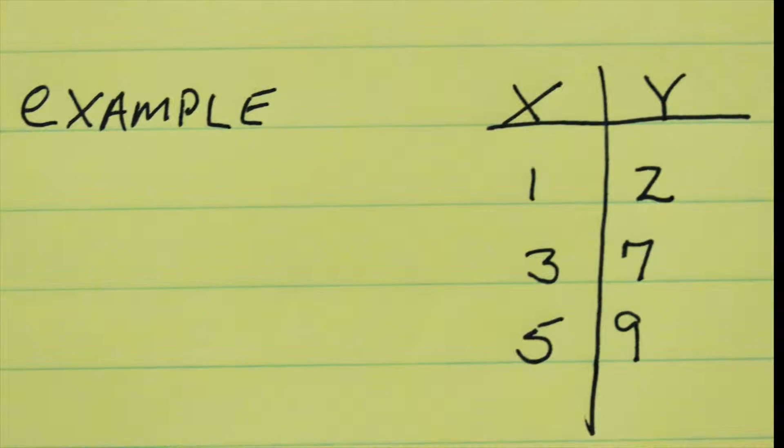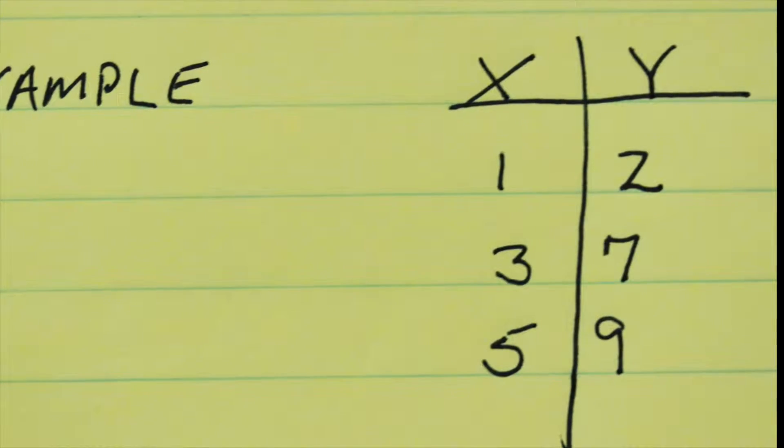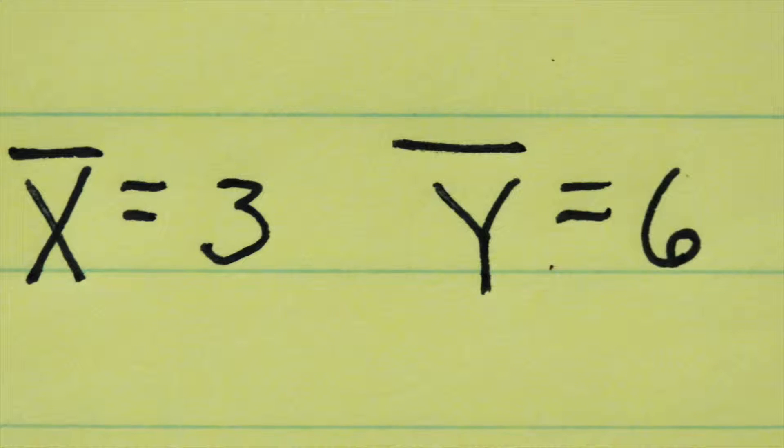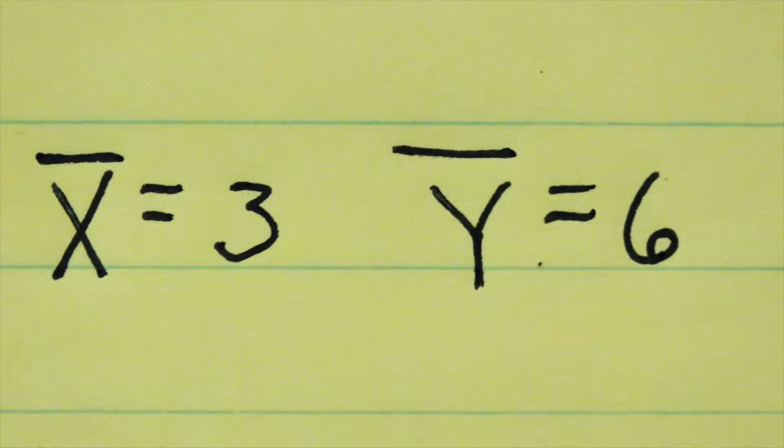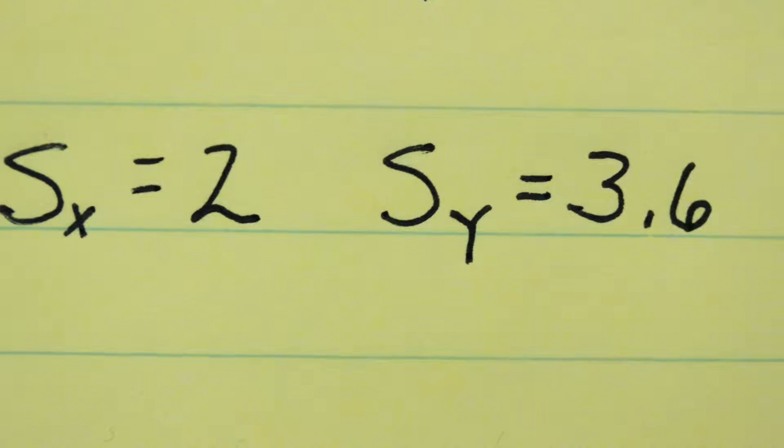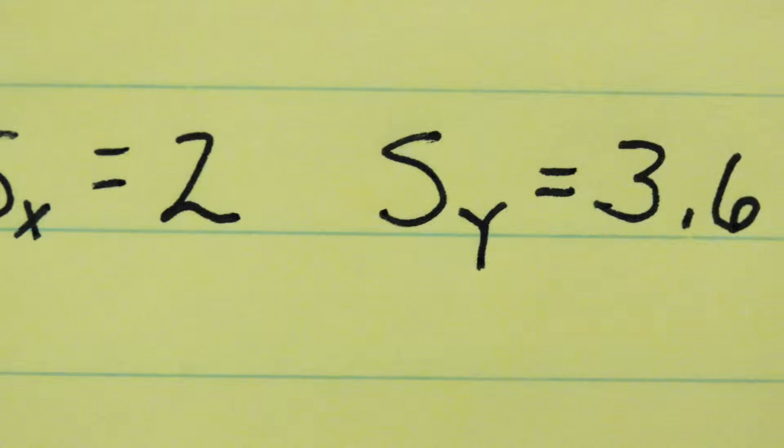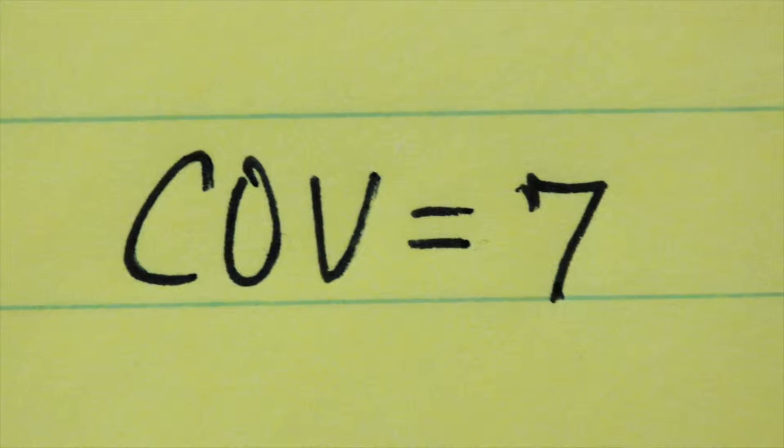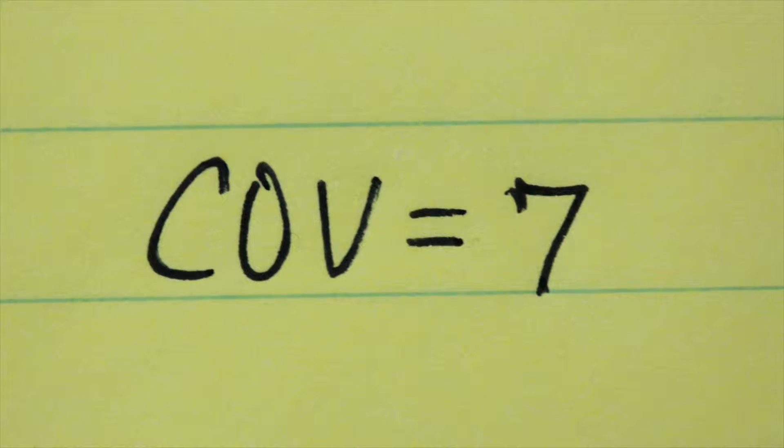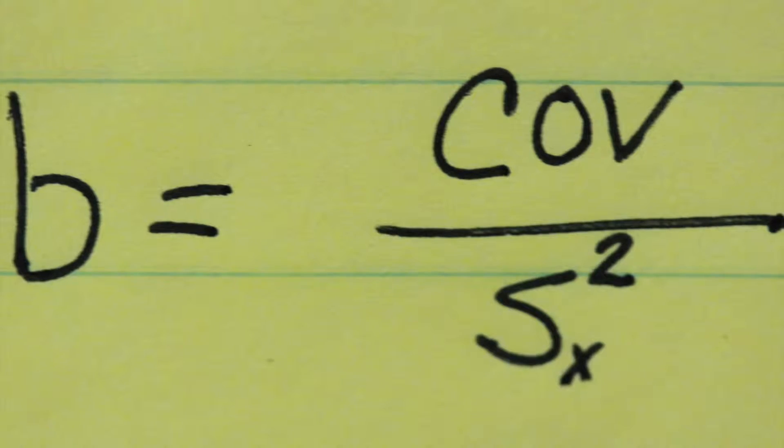Using the same numbers from our previous videos, we can work with regression. Our averages are 3 and 6. Standard deviations are 2 and 3.6. And from the covariance video, the covariance was 7. We'll work with these numbers to estimate a regression equation.